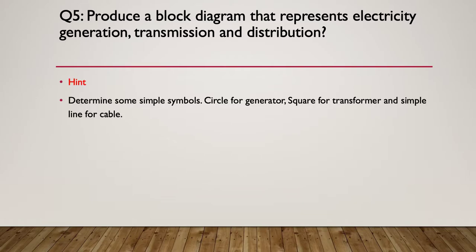So here's our hint. Determine some simple symbols, I should say. Say a circle for a generator, a square for a transformer, and a simple line to indicate cables between these things.